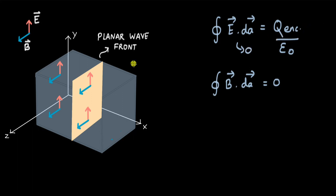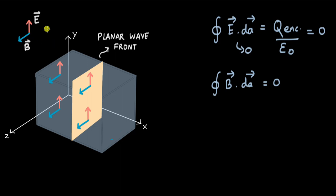This is consistent with Gauss's law because there is no charge enclosed in the Gaussian surface, so the right-hand side is also zero. The second Maxwell's equation is also satisfied because the total magnetic flux is zero — the integral of B·dA is zero for our assumed wave. Note that we assumed the electric field has only a y-component and the magnetic field only a z-component — we never assumed any component along the direction of motion.